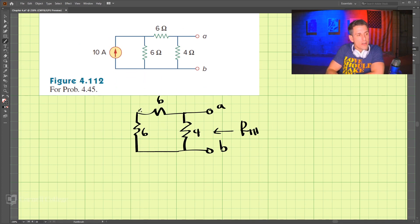These two are in series, so we can combine those. Those become 12 ohms. And then the 12 and the 4 are then in parallel.